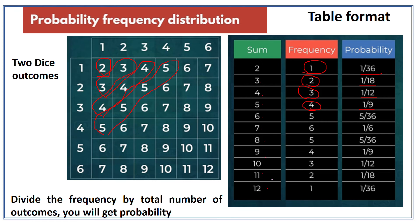You can observe a pattern: the frequencies go 1, 2, 3, 4, 5, 6 up to the sum of 7, and from 7 they go back down — 5, 4, 3, 2, 1 — because the pattern repeats. Although the sum is higher, its occurrence follows the same pattern. So the probability of getting those numbers will also be the same. Here we divided the frequency by the total number of outcomes and got the probability.